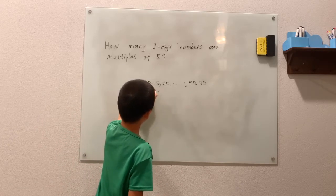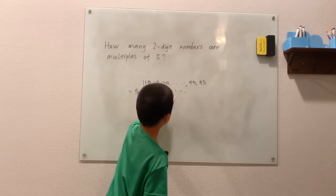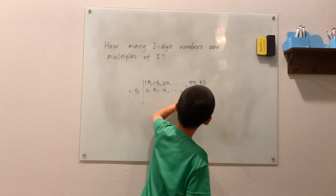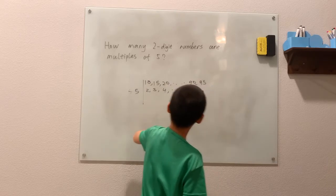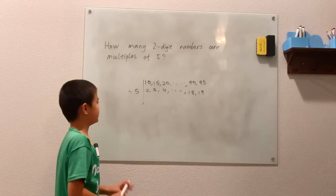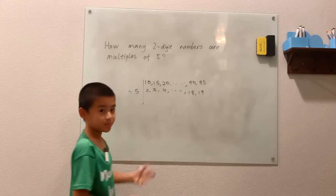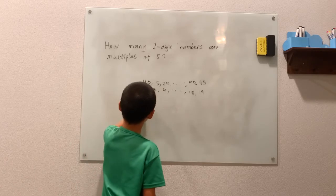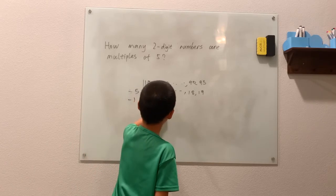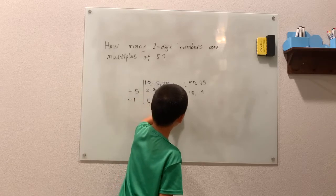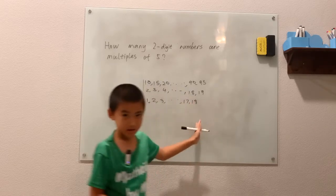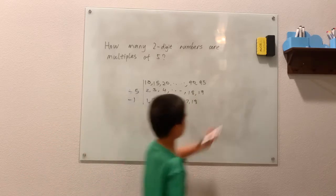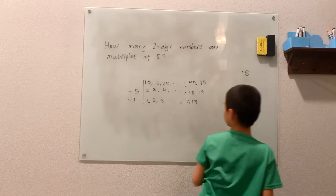Dividing by 5 gives 2, 3, 4 ... and 18 and 19. So finally, we subtract 1 from each of the numbers in this list, yielding 1, 2, 3 ... and it's pretty clear that there are 18 two-digit numbers that are multiples of 5. So write 18 here.